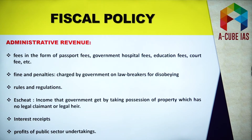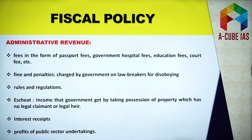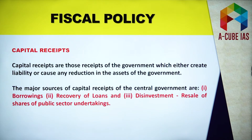Administrative revenue arises because of administrative services that you are receiving. This includes fees such as passport fees, government hospital fees, education fees, and court fees. It also includes fines, penalties, and license fees. All these sources are categorized under administrative revenue.